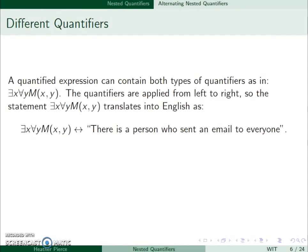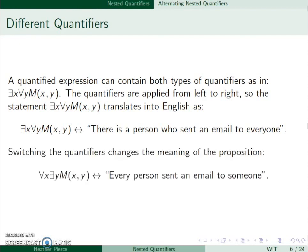A quantified expression can contain both types of quantifiers, like ∃x∀y M(x,y). These are always applied from left to right. So our statement ∃x∀y M(x,y) means there is a person who sent an email to everyone. Switching quantifiers is going to change the meaning of this. If we move the for all to be first and have ∀x∃y, this means every person sent an email to someone. So the order is very important.